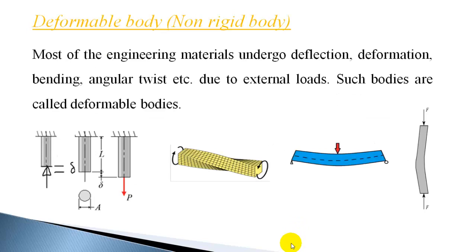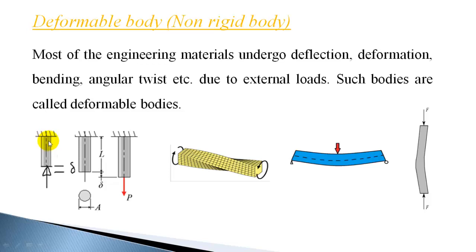Let us see what is a deformable or non-rigid body and what are the different kinds of deformation a load can produce. If a bar is subjected to axial compressive force, there will be a reduction in length — delta is the reduction in length, and the initial length was L. The fixed end exerts an equal and opposite force to maintain equilibrium, and both forces try to compress the body and reduce its length.